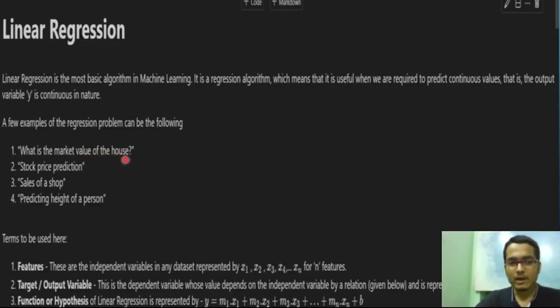A few examples: What is the market value of the house? I told you on the basis of area and price in the last video. Stock price prediction, sales of a shop, predicting height of a person based on weight. You can roughly calculate from a variety of data and start predicting the height of a person on the basis of weight.